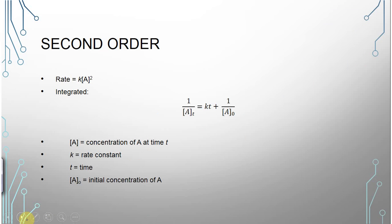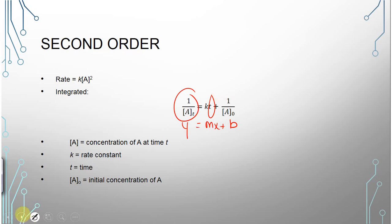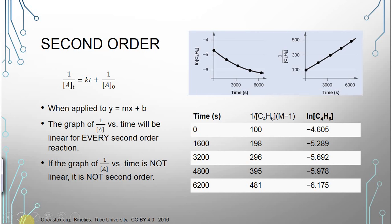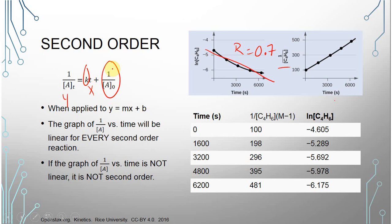For a second order rate law, the integrated rate law is: 1/[A]_t = kt + 1/[A]₀. Applying this to y = mx + b: Y is 1 over concentration at any given time, X is time, slope is K, and the Y-intercept is 1 over the initial concentration. If you have a second order reaction and graph natural log of concentration versus time, it's going to give you a curve — not a line. The only linear graph for a second order reaction is 1 over concentration versus time.